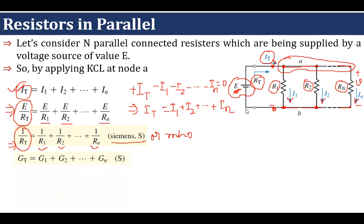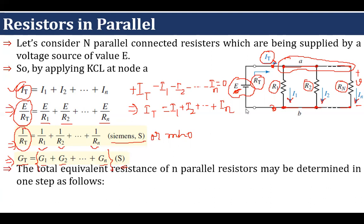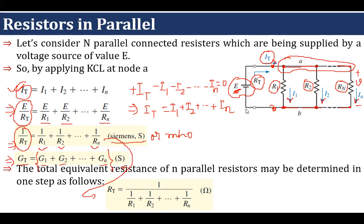We know that 1/R is conductance. So we can write that the total conductance Gt for all parallel-connected resistances equals the sum of individual conductances: G1 + G2 + … + Gn, with the unit of Siemens. From this equation we can easily find the net or equivalent total resistance RT = 1 / (1/R1 + 1/R2 + … + 1/Rn) in Ohms.